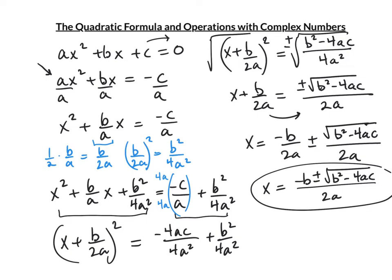A couple of things to observe before we try it out. Notice that the equation must equal 0. a is in front of the squared term, b is in front of x, and c is the last number. Then we just plug into the expression and work it out.